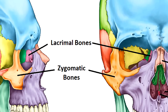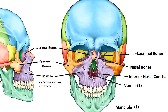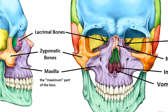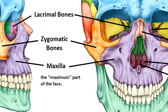Next we have the zygomatic bones, which is just a fancy word for your cheekbones. And finally we have the maxilla, or maxillary bones, which make up the maximum area of the face and articulate with most all of the facial bones. The maxilla make up the maximum part of the face — that's how you can remember these bones.